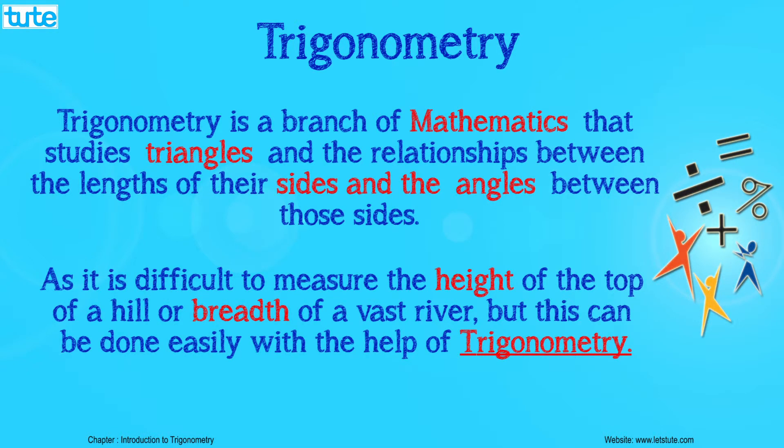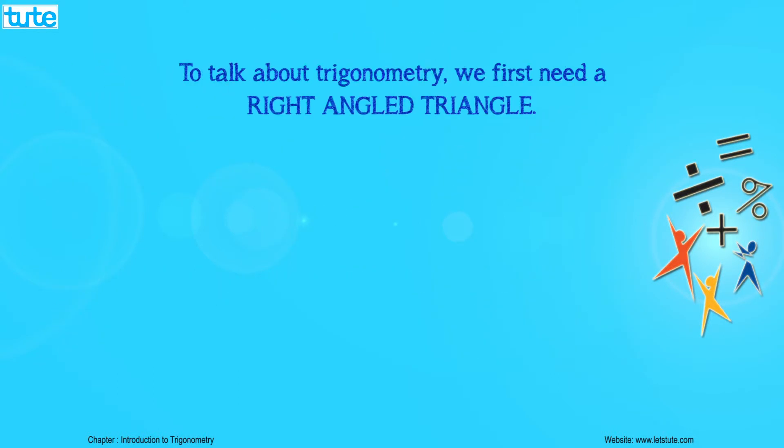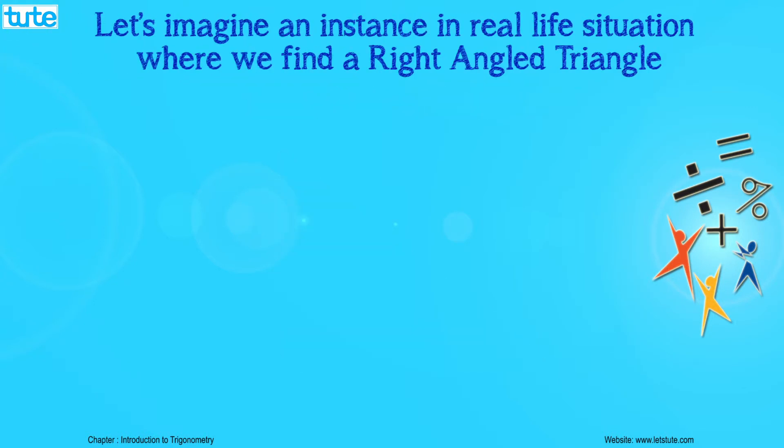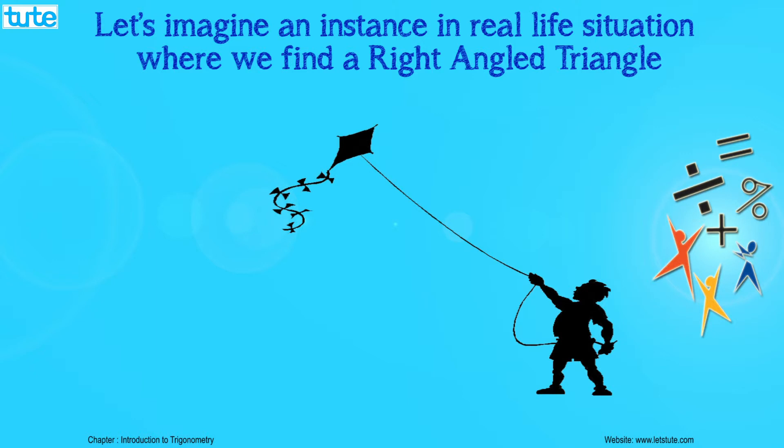To talk about trigonometry, we first need a right-angled triangle. Let us imagine an instance in real life situation where we find a right-angled triangle. Suppose a boy is standing on the ground and flying a kite. Can you find any right-angled triangle in this particular situation?